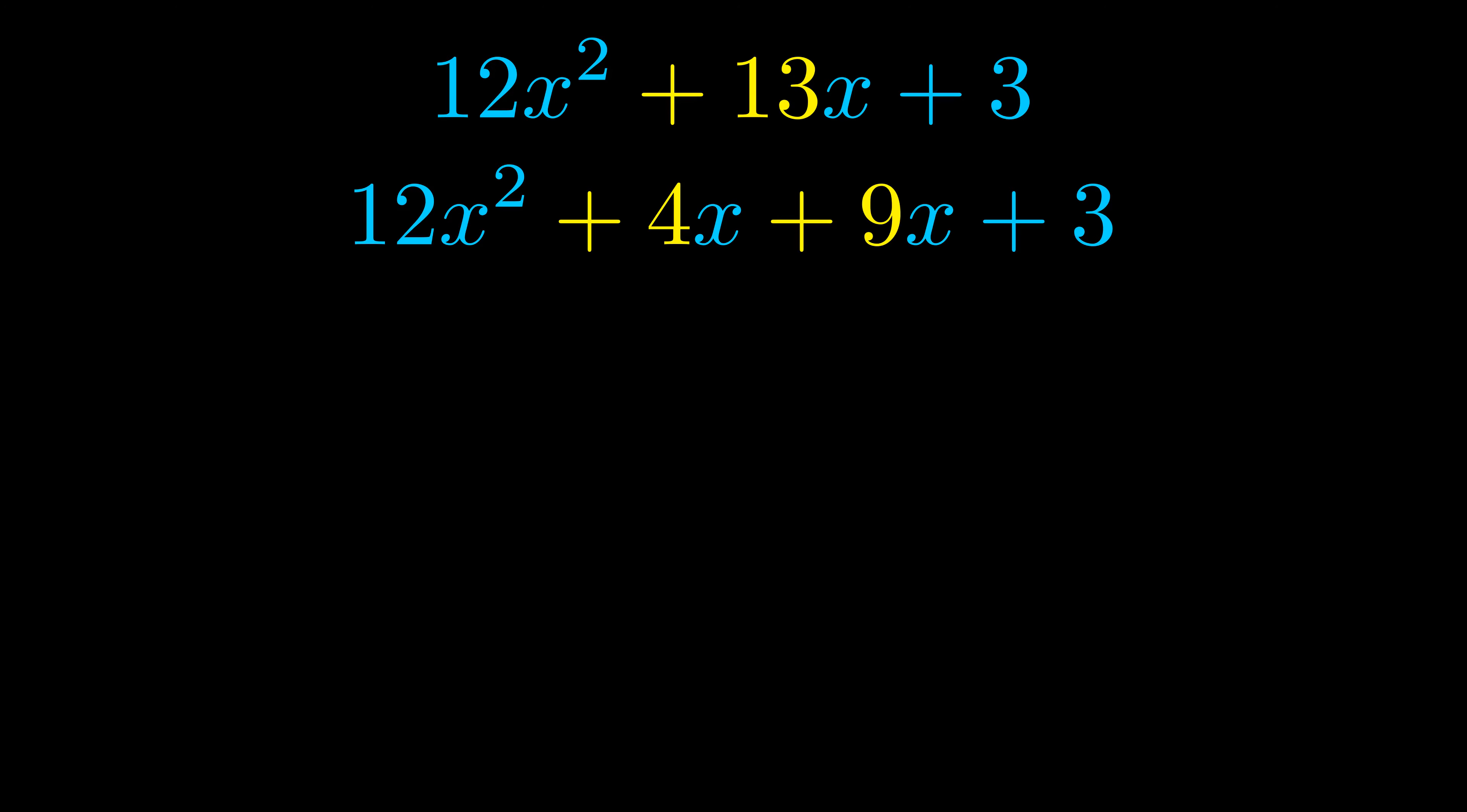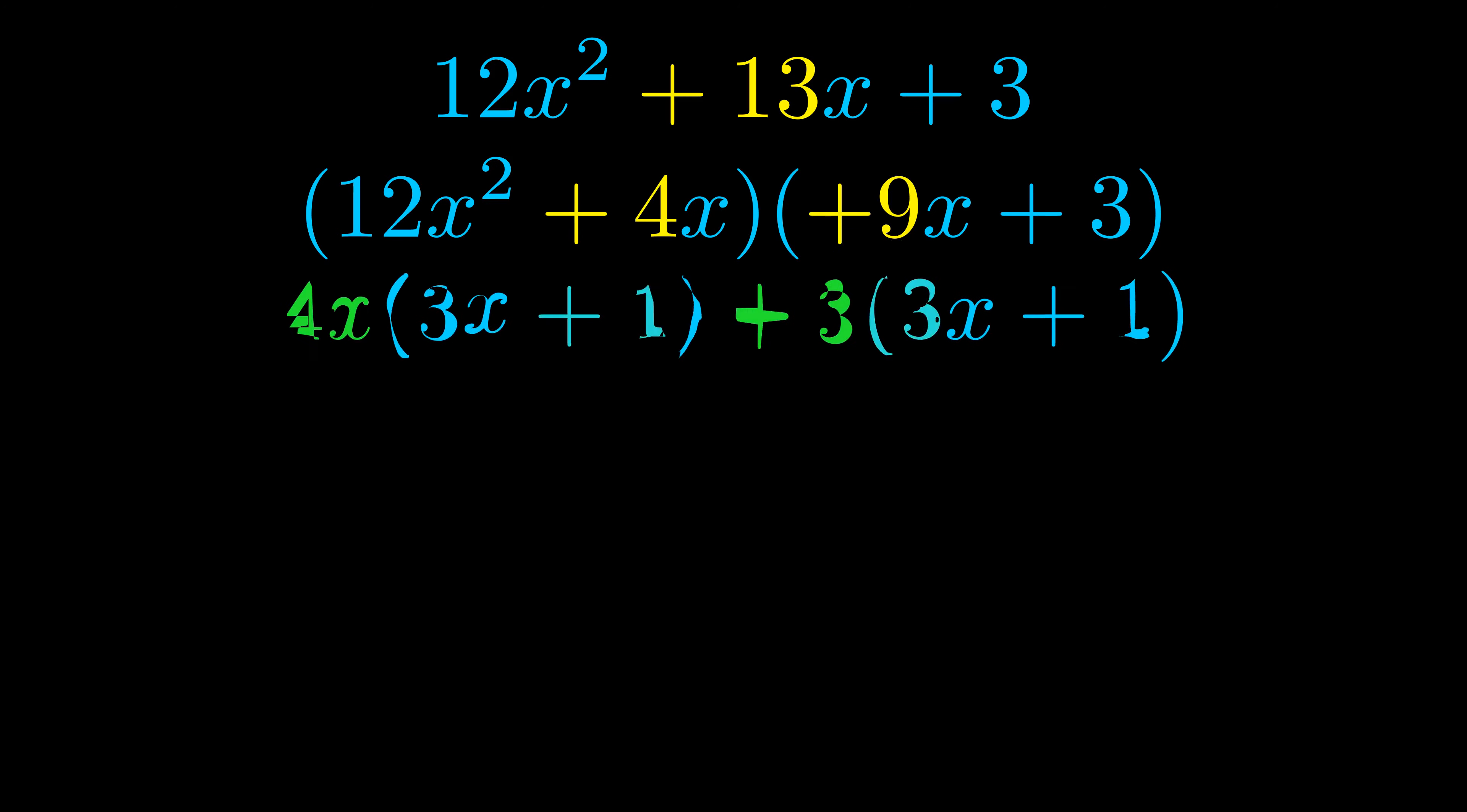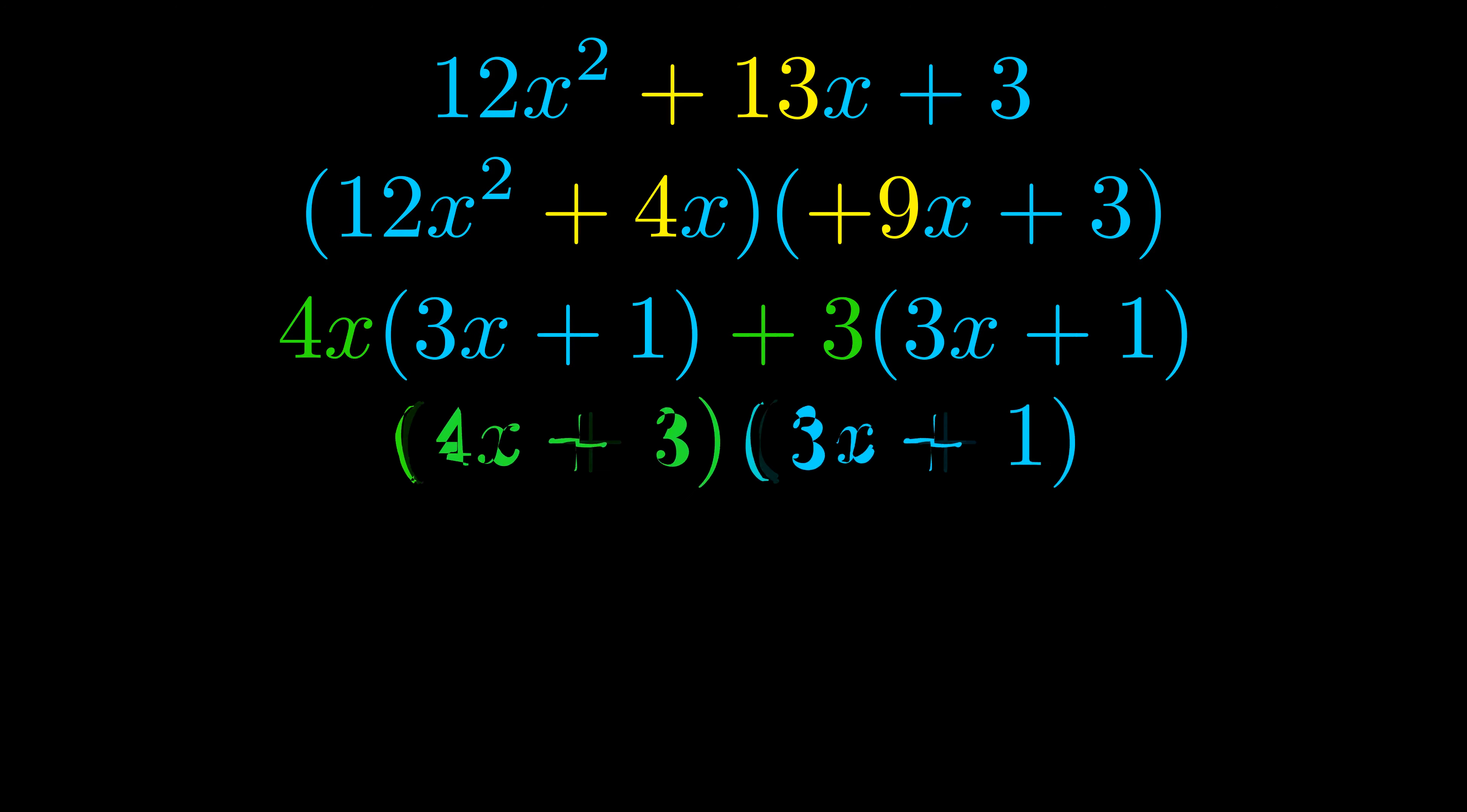Once we've done this we go ahead and we put parentheses around the first term and the last term and we do that so that we can take the greatest common factor out of both terms. We can see the greatest common factor is now outside in green. Notice also how what remains inside of the parentheses is the same in both cases. The blue values are the same.